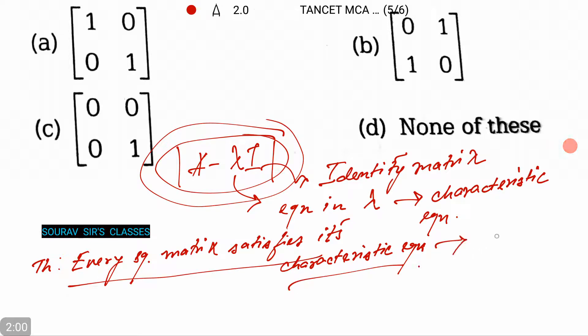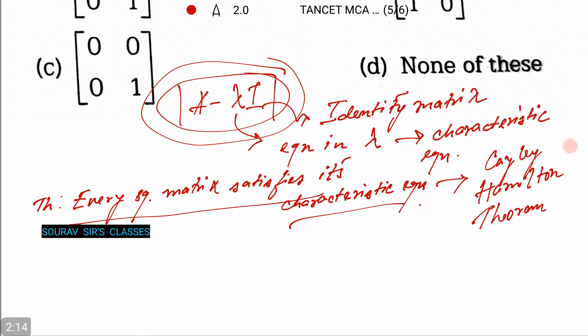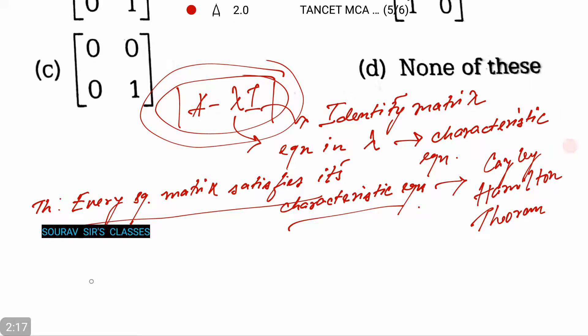This is called the Cayley-Hamilton theorem. So for this, let's just evaluate the characteristic equation A minus λI.